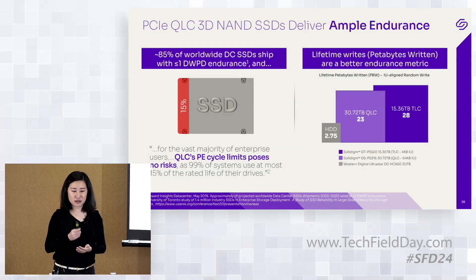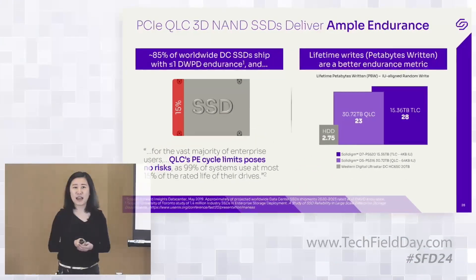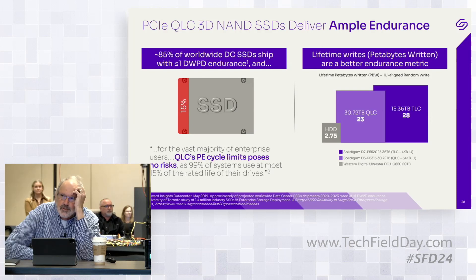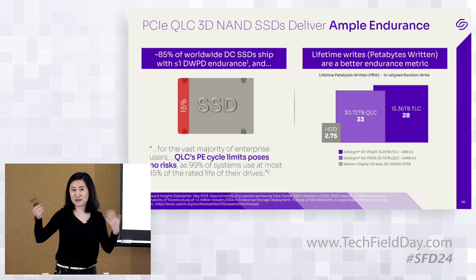Here's a teaser for you. A 30-terabyte QLC allows you to write 23 petabytes randomly to the drive over a five-year lifetime. A 15-terabyte TLC allows you to write about 28 petabytes over the lifetime of the drive. So TLC and QLC both give you plenty of writes over their lifetime. And sequential writes would be significantly higher — you'd probably be able to write around 100 petabytes for a 30-terabyte QLC if you write sequentially.